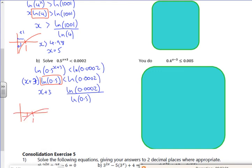There's 1. Log of a half is negative. So if I'm dividing through by a negative, I must flip that inequality. So be really, really careful. Flip that inequality.